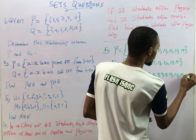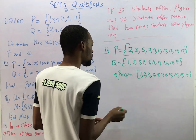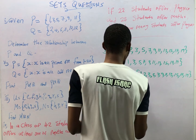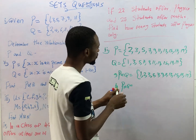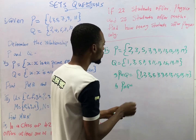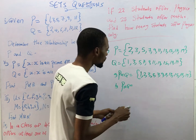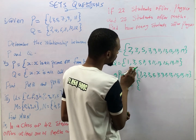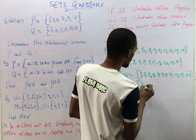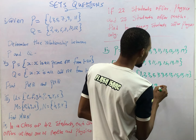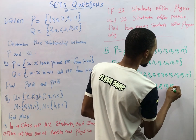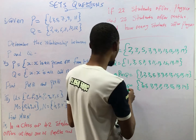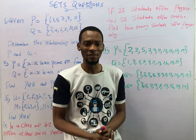So that is P union Q. Now P intersection Q is simply what they have in common. Looking at both sets: they have 3, 5, 7, 9, 11, 13, 15, 17, and 19 in common. So P intersection Q = {3, 5, 7, 9, 11, 13, 15, 17, 19}. That's the answer to that question.